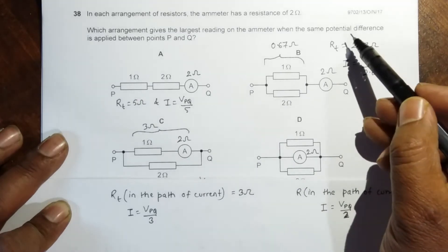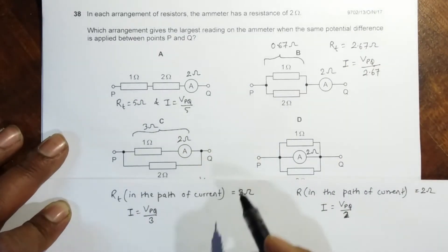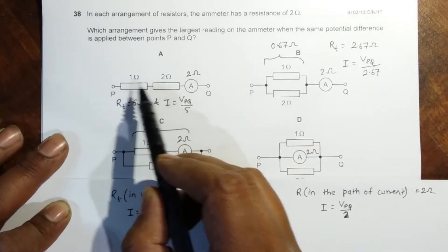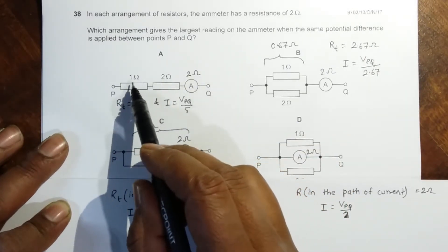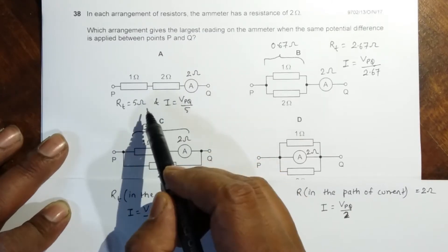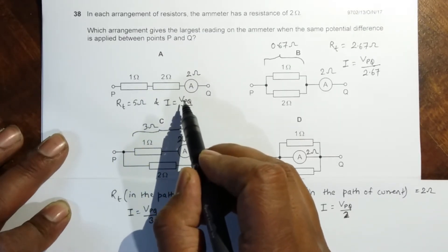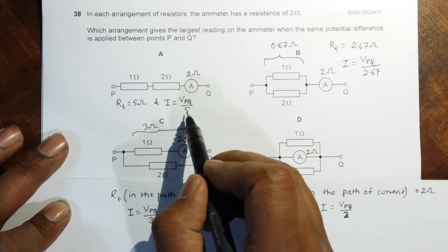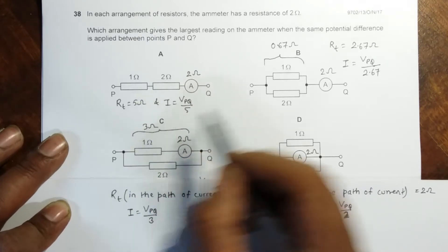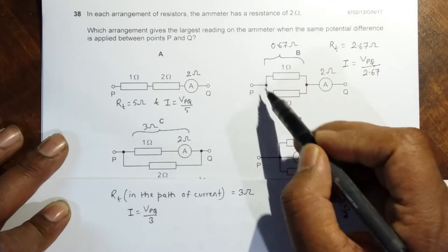It is given that the potential difference between P and Q is the same in all cases. In the first figure, the total resistance in the circuit is 1 plus 2 plus 2, which is 5 ohms. So the current will be equal to the potential difference between P and Q divided by 5.